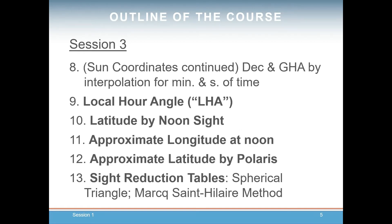Then we'll cover how to get the declination and GHA by interpolation when you need to take a sight with your sextant that's not on the whole numbered hours, such as 8 hours, 15 minutes, and 14 seconds. Then we'll cover the very important concept of local hour angle, which is critical for calculating your position.